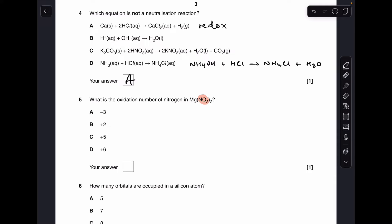Number 5. The oxidation number of nitrogen in Mg(NO3)2. So I've highlighted that nitrate ion because that's all we need to think about. So NO3 with a 1 minus charge. 3 oxygens. Minus 2 each. So there's minus 6 charge coming from the 3 oxygens. So to leave that 1 minus charge, nitrogen needs to be plus 5. So C.